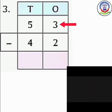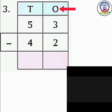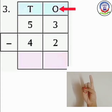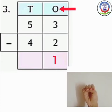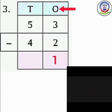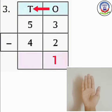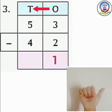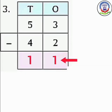Number 3: 53 minus 42. पहले हम ones column में से subtract करेंगे. Numbers in the ones column are 3 and 2. Open 3 fingers and close 2 fingers. How many fingers are left? 1. So we will write here 1. Now we will subtract in the 10s column. Numbers are 5 and 4. Open 5 fingers and close 4 fingers. How many fingers are left? 1. So we will write here 1. The difference is 11.